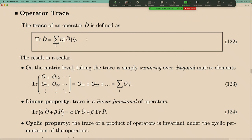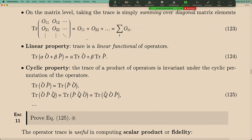Trace also has nice properties. It is linear: you can first linearly combine operators and then take the trace, or take the trace first and then linearly combine. I should emphasize that after taking the trace, the result is already a number — trace always reduces an operator (a matrix) back to a number equal to the sum of the diagonal elements.